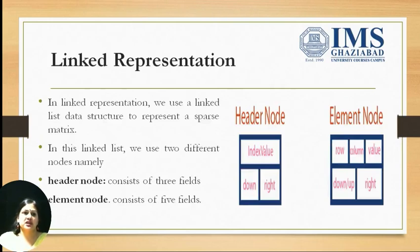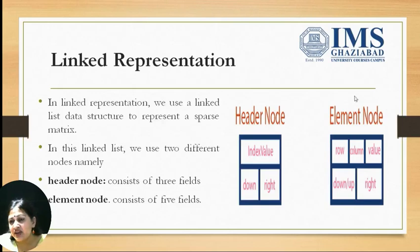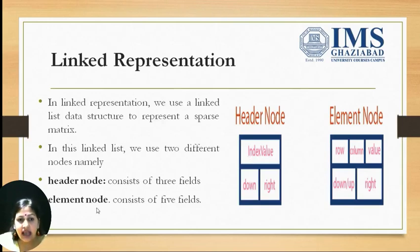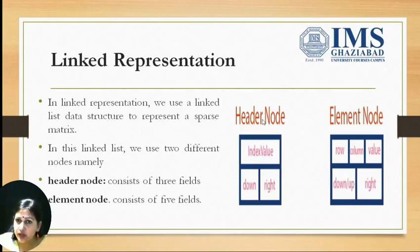Now, linked representation. In linked representation we use a linked list data structure to represent a sparse matrix. In this linked list we use two different types of nodes: one is known as a header node and the second is known as an element node. The header node is used to represent rows and columns, and the element node is used to represent the values. The header node consists of three fields and the element node consists of five fields. The header node contains an index value, a down pointer, and a right pointer. The down pointer points to the next header node, whereas the right pointer points to the non-zero element in that particular row or column.